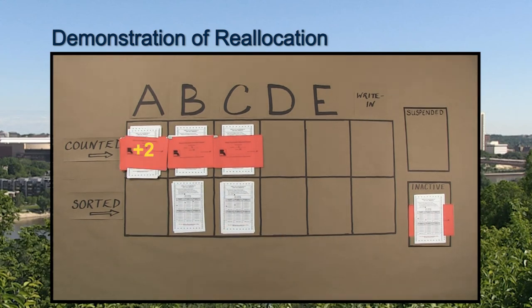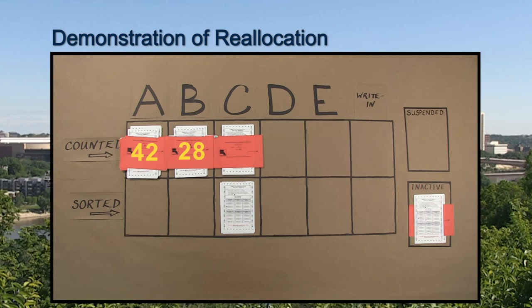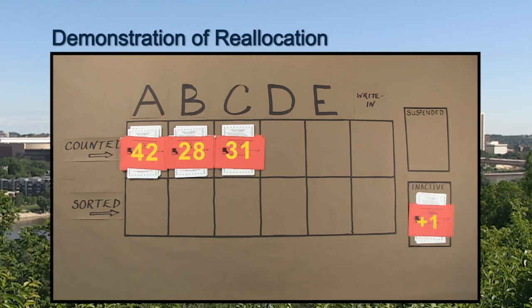Candidate A gained 2 votes and now has a total of 42 votes. Candidate B gained 2 votes for a total of 28 votes. And Candidate C gained 7 votes for a total of 31 votes. There was one ballot that could not be reallocated, so the total of inactive ballots increases to 3.